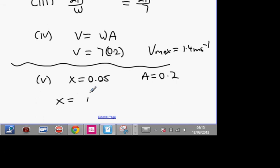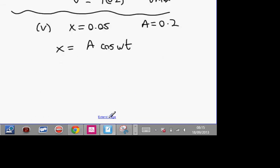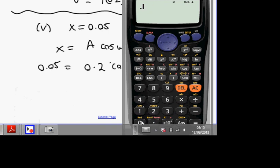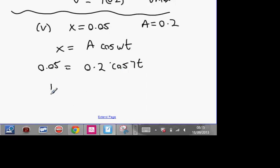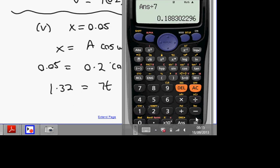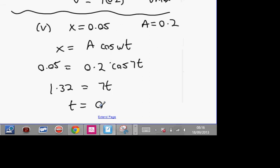So what we can do here for part 5 is X equals 0.05. Our amplitude is 0.2. And we're starting at an extreme point. X equals A cos omega T. And what we can do next is X equals 0.05 equals 0.2 cos 7T. Get your 0.05 divided by 0.2, cos inverse your answer. And then it's 1.32 equals 7T. Divide your answer by 7, and you should get 0.188 seconds. Time taken is 0.188 seconds.